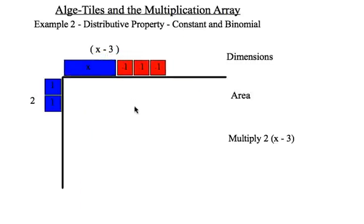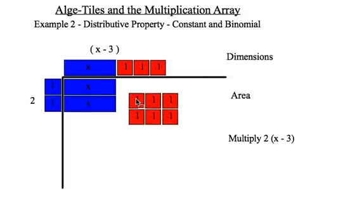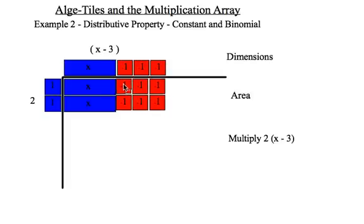So, from the multiplication array, again, I multiply 1 times x to get x. And I repeat that calculation here. Now, here's where I need to be careful. I have 1 times negative 1, which is negative 1. And I need to repeat that 6 times. And there's my result. So, the result or product of 2 times x minus 3 is equal to 2x minus 6.